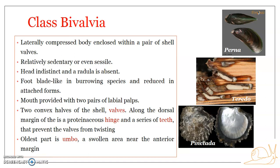Bivalves can be defined as a group of bilaterally symmetrical, laterally compressed mollusks with paired mantle lobes — right and left mantle lobes — and a bivalved calcareous shell. The laterally compressed body is enclosed within a pair of shell valves, which is how the name bivalves originates. They are relatively sedentary or even sessile in nature.